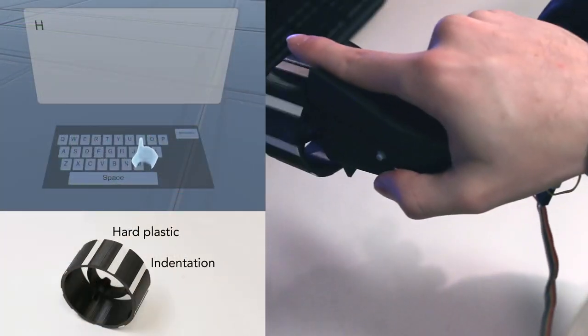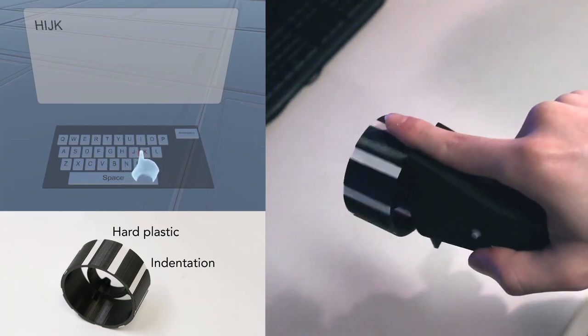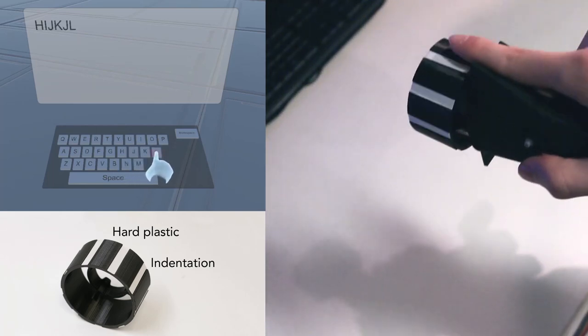In this scene, we show how shapes on the wheel can add to the realism of a virtual keyboard. A user can even brush along the rows of keys to feel the grooves.